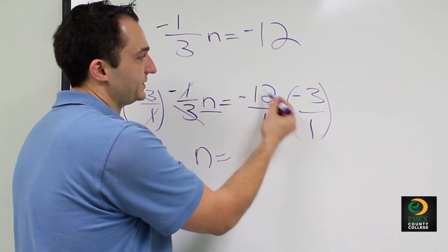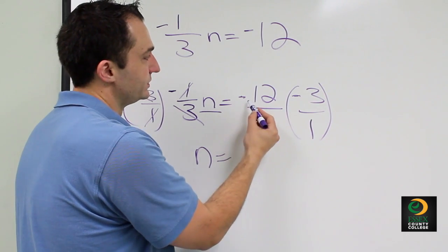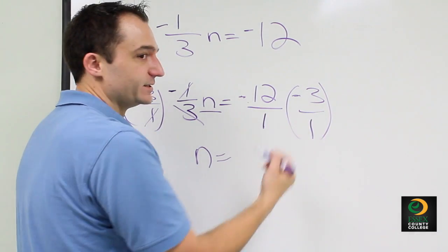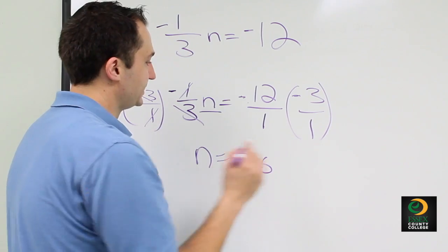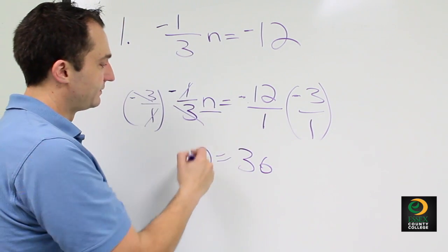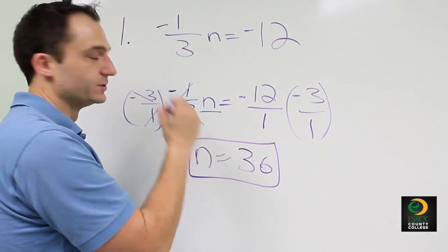On the right hand side there's nothing we can cross simplify with, so we're just going to do negative 12 times negative 3. And that gives us a positive 36. So your final answer for problem number 1 would be n is equal to 36.